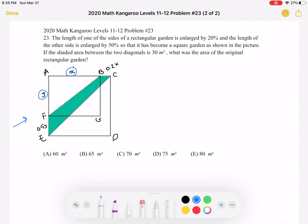So when we enlarge a side length by 20%, we'll have X plus 0.2X as the entire side length AC of the square, and the other side is enlarged by 50%, so we have Y plus 0.5Y as being the entire side length AE of the square.